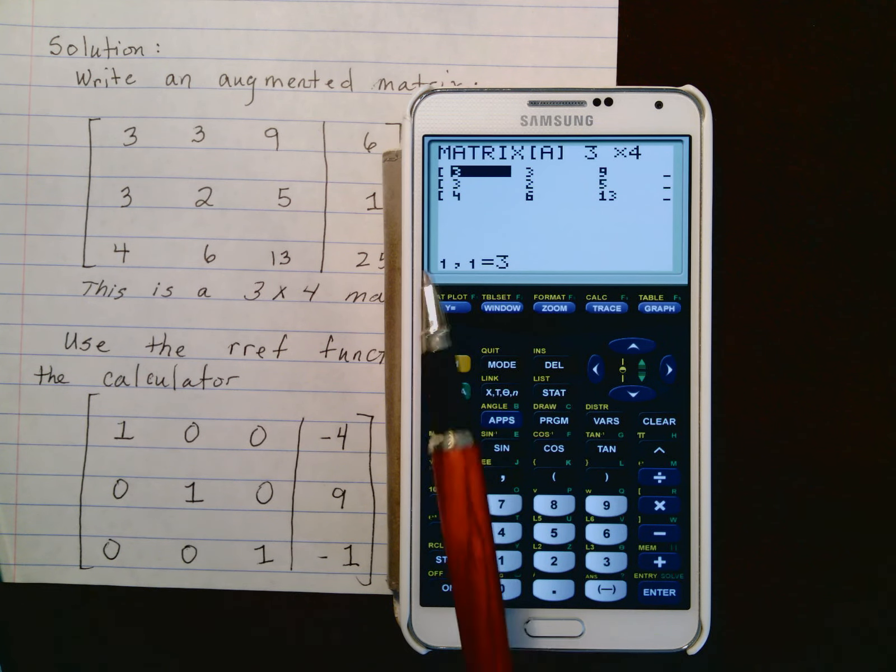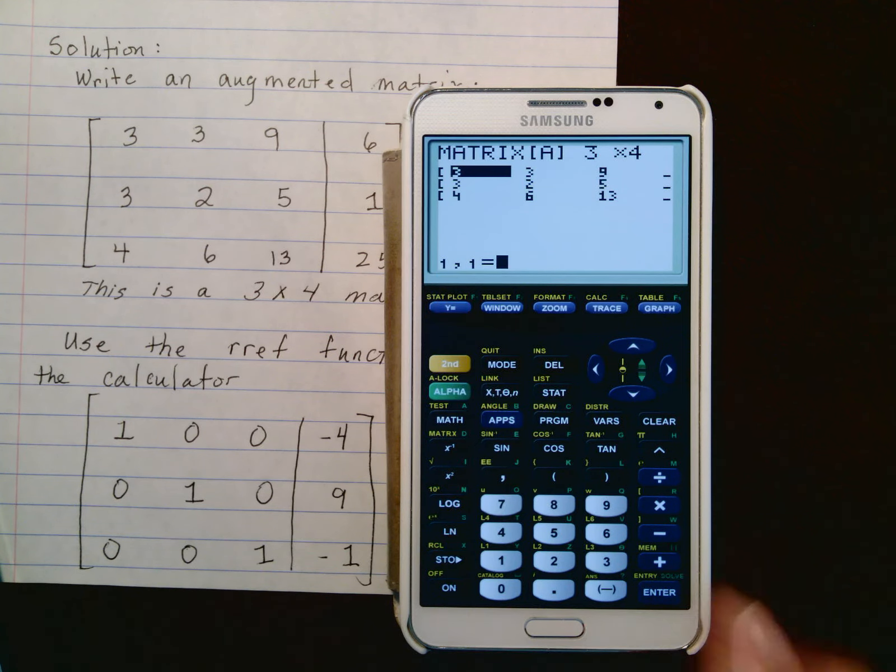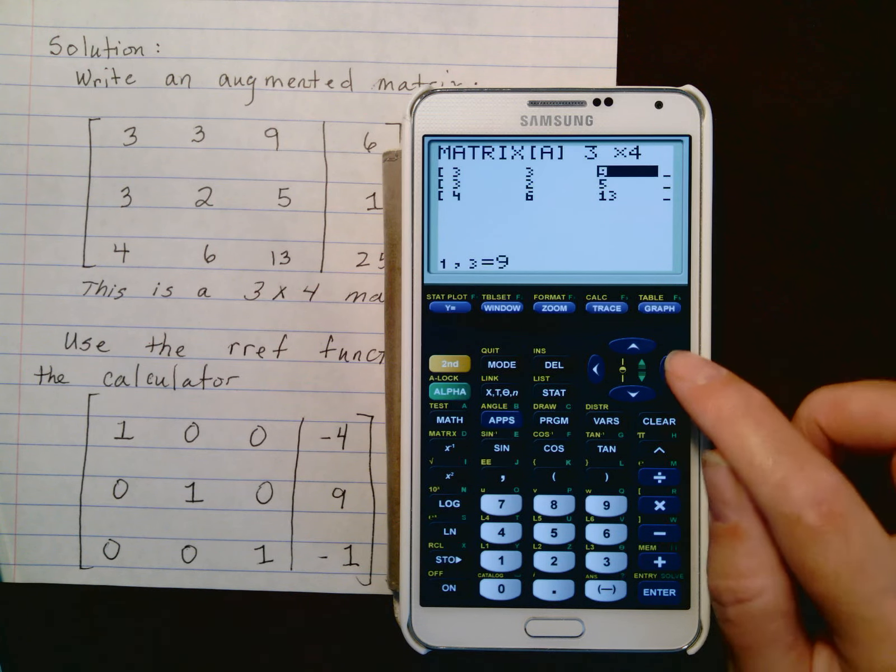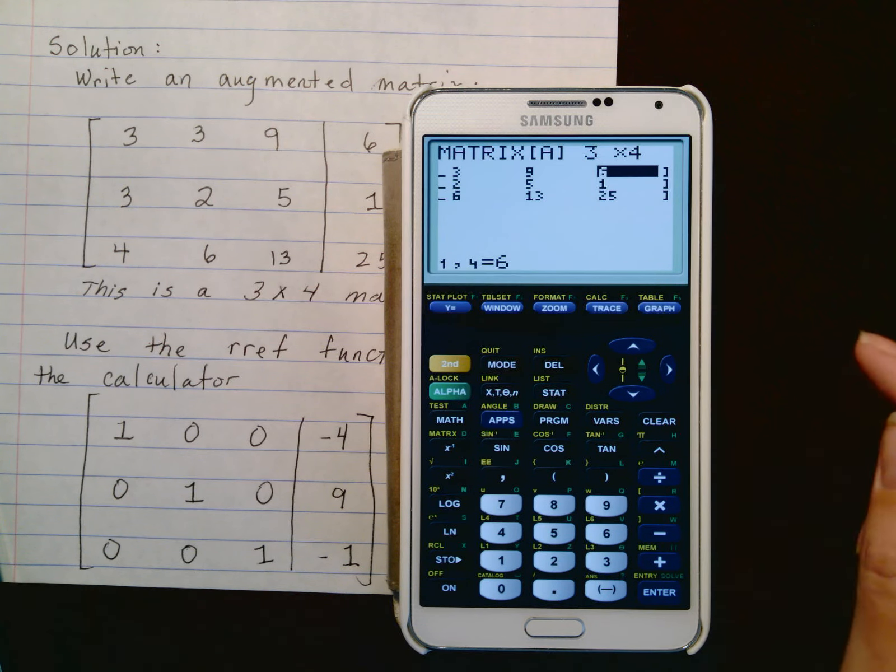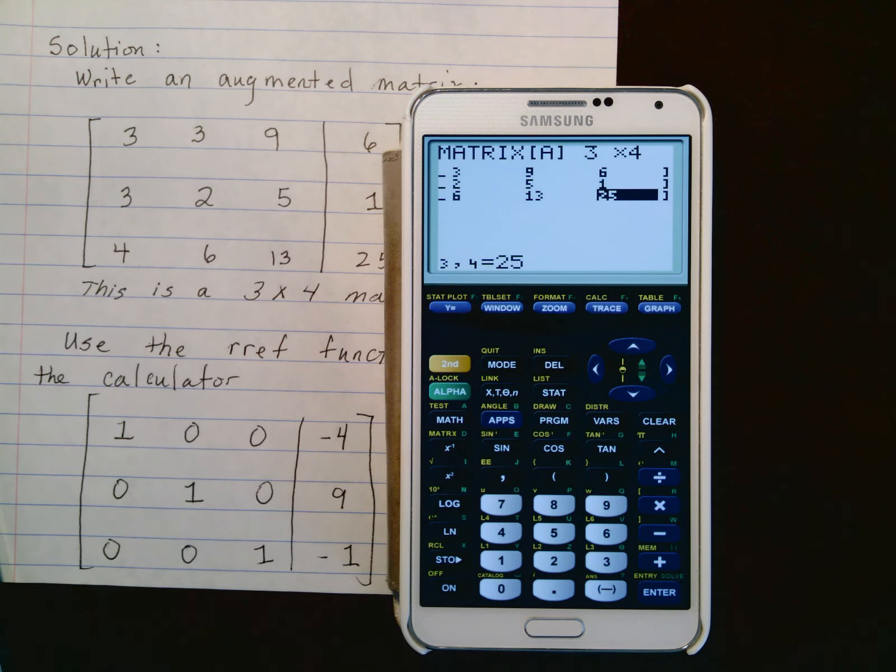This is saying you're in row one, column one. Notice I put a 3 there, and just hit enter. Put all of your entries in and double check to make sure you've entered them all correctly. Once you've entered in the 3x4 matrix, go to 2nd, quit.